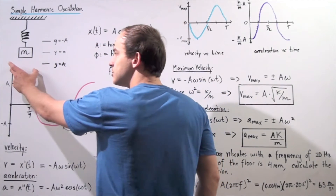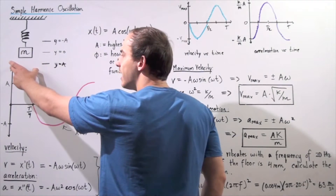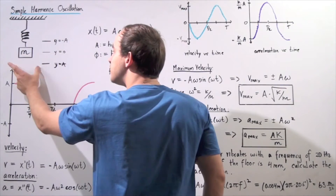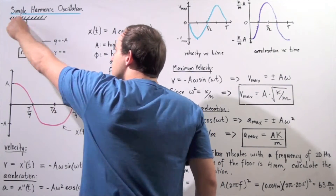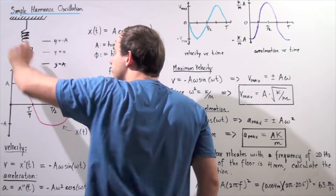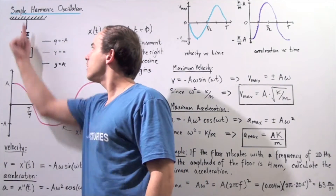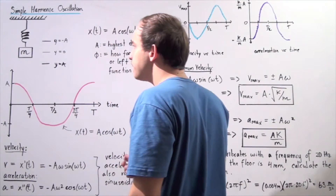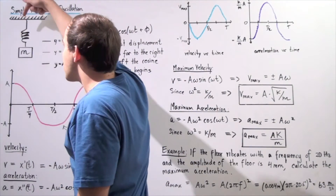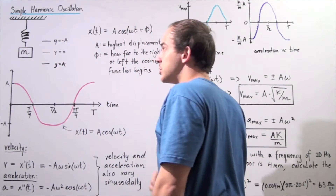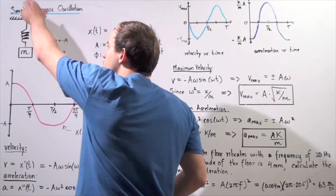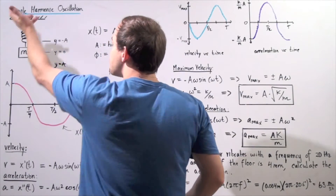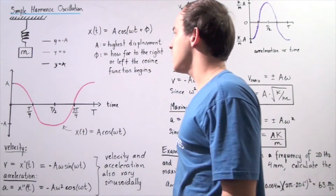At that stretched position, I hold the object and then let go. The object will begin to oscillate. The spring will create a restoring force pulling the object upward from the stretched position, and in the upper position it will push the object in the opposite direction. The object will oscillate back and forth between these two points, experiencing simple harmonic oscillation.